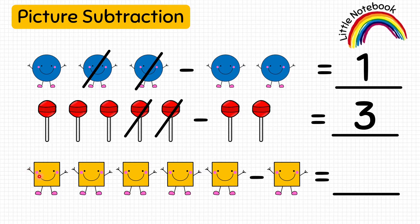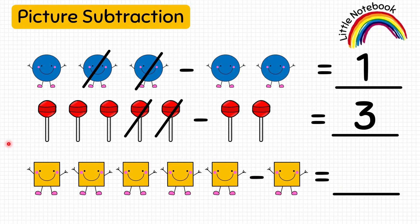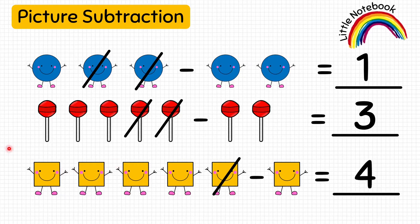Now the next question: five squares minus one square equals how many squares? Let's cross one square and we are left with four squares, so our answer is four. Five minus one equals four.